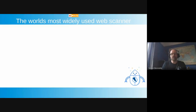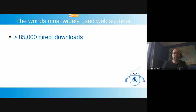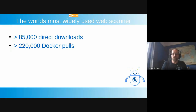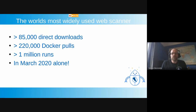We are now claiming that ZAP is the world's most widely used web application scanner. We've been claiming to be the world's most popular free and open source web security tool for a long time. The justification is with the latest release, ZAP 2.9.0, we've had more than 85,000 direct downloads and more than 220,000 Docker pulls. We know that ZAP has been run more than 1 million times — and that was just in one month in March. We're not aware of any other security tool, commercial or open source, with that kind of usage.